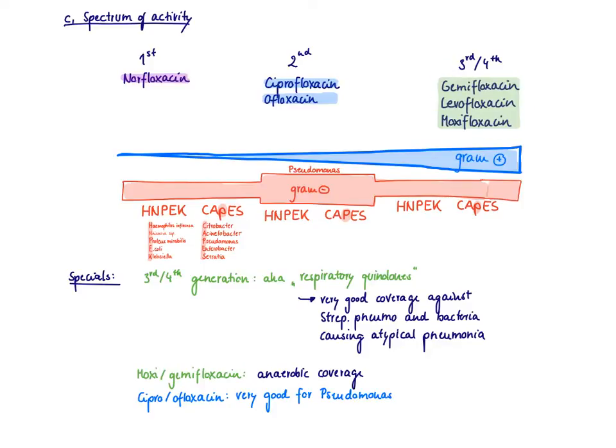You should remember that the quinolones are generally very good against gram-negative bacteria and are just increasing their activity over the generations for gram-positive bacteria. This is in contrast to the penicillins or cephalosporins, where we always have good gram-positive coverage and add-on gram-negative coverage through the generations.